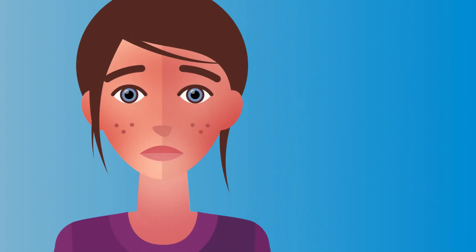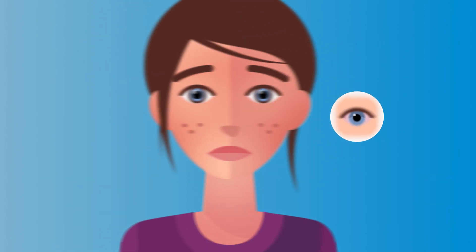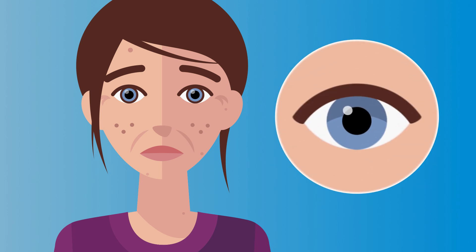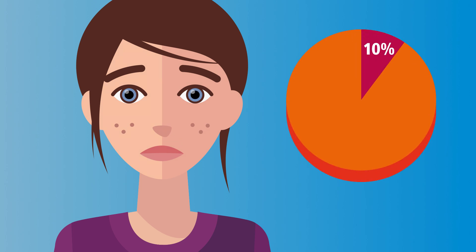UV radiation can also cause sunburn of the cornea, called photokeratitis. Negative effects of prolonged UV exposure include accelerated aging of the skin caused by UV-A radiation, and it can also result in eye diseases such as cataracts. This causes nearly 10% of blindness worldwide.